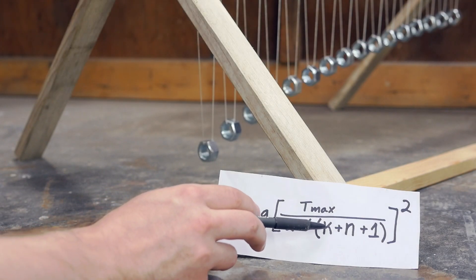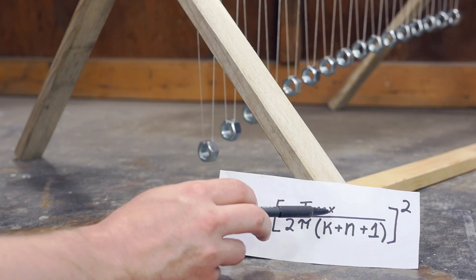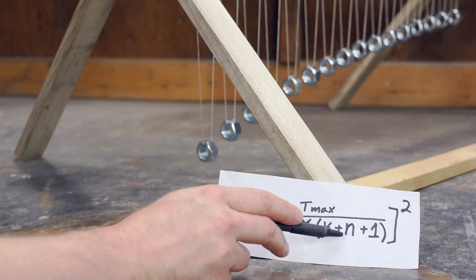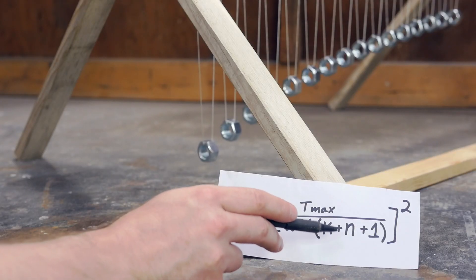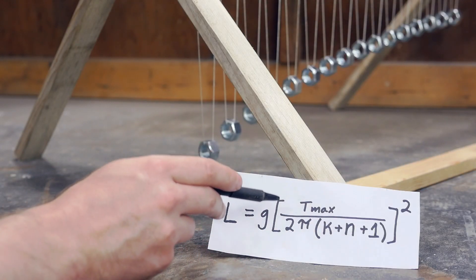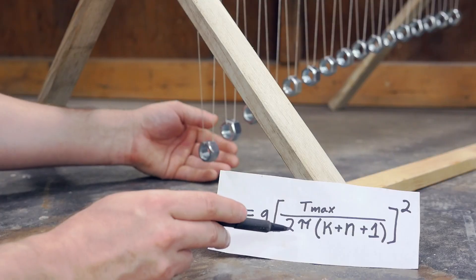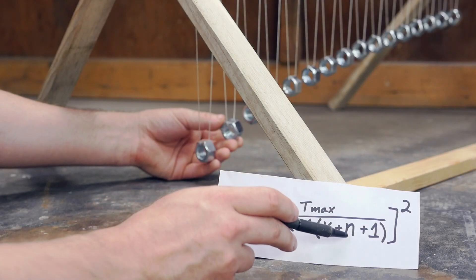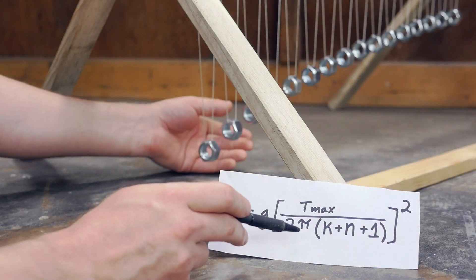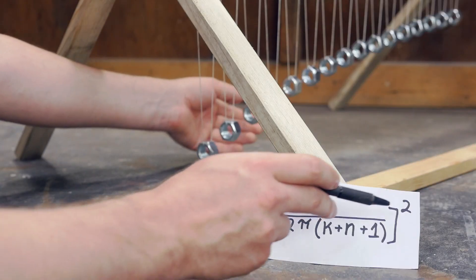Then we have three other numbers. We have K, N, and T max. Now, N is a pretty easy number to figure out. That stands for the number of the pendulum that we're on in the array. So if we wanted to calculate the length for the second pendulum, we'd put 2 in for N. If we wanted to calculate the length of the third, we'd put in 3, and so on.